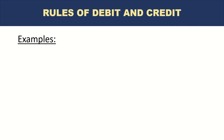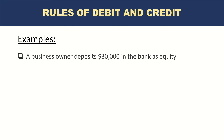Are you ready to apply whatever you have learned about the rules of accounting and accounting principles to actual accounting entries? Let's go. The first example we are going to deal with is a business owner deposits $30,000 in the bank as equity. This is one of the very early transactions in a business, when a business owner is setting up the business initially and investing some money.